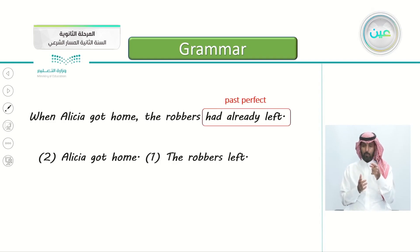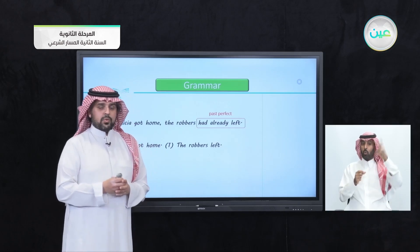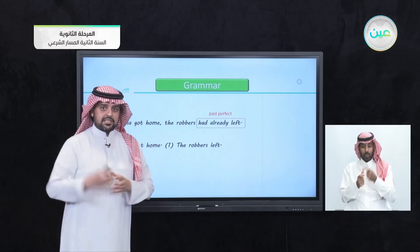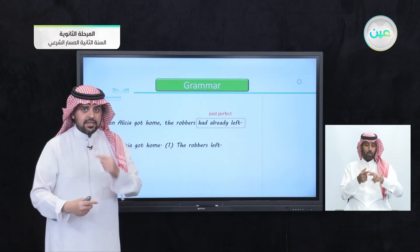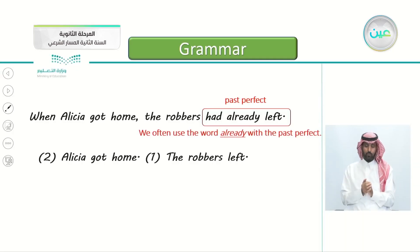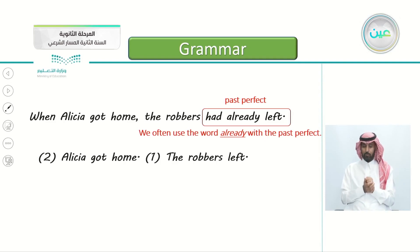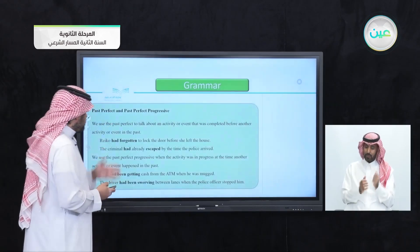Notice we used the past perfect. This is when we use the past perfect: when we have two past events, one happened after another. We often use the word 'already' with the past perfect — 'had already left' — it means they left and it's done.